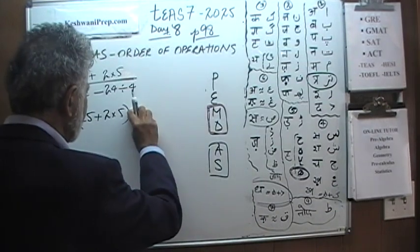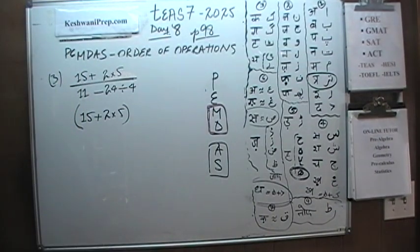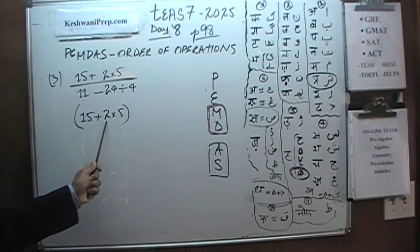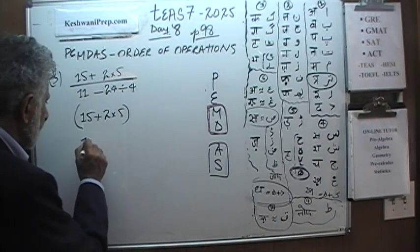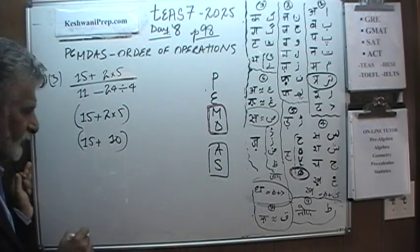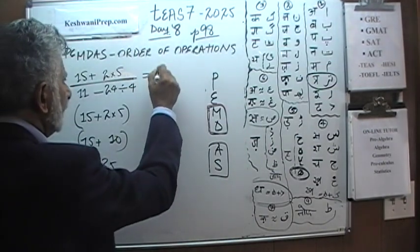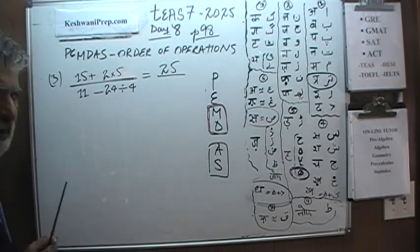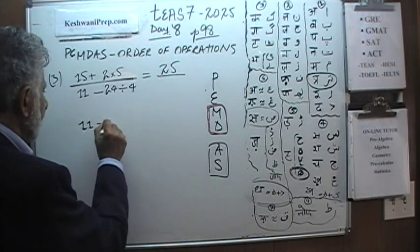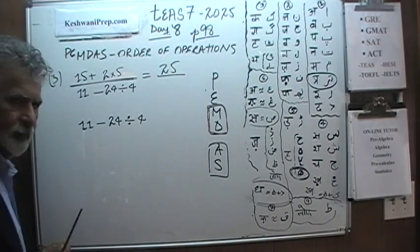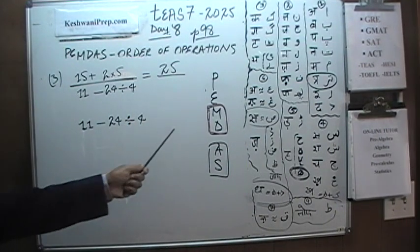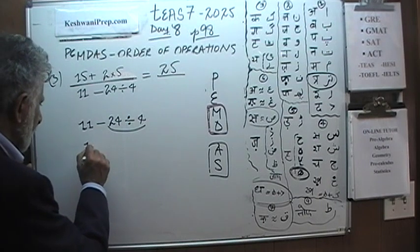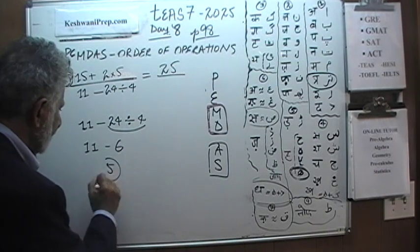Let's concentrate on the top part first. We have 15 plus 2 times 5. Multiplication comes before addition, so 2 times 5 is 10, and 15 plus 10 gives us 25. That 25 goes on top. Now we do the bottom: 11 minus 24 divided by 4. Division has priority over subtraction, so 24 divided by 4 is 6, and 11 minus 6 gives us 5 on the bottom.